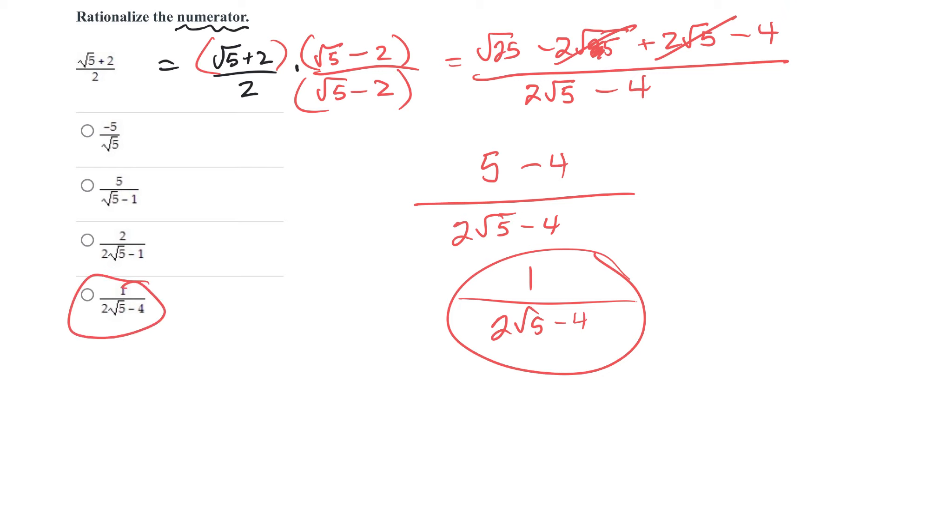So that's how you rationalize the numerator. It's the same as rationalizing the denominator. It's just in this case, they say thou shalt not have radicals on the top. Typically, when we're simplifying anything, when we say simplify, it means don't have a radical on the denominator. So typically, you don't do that question.